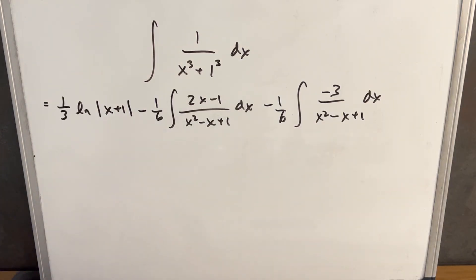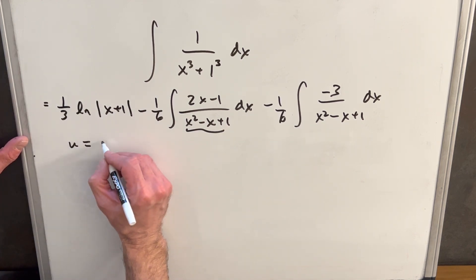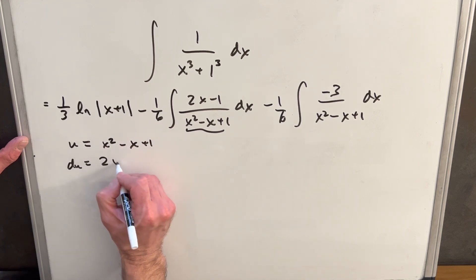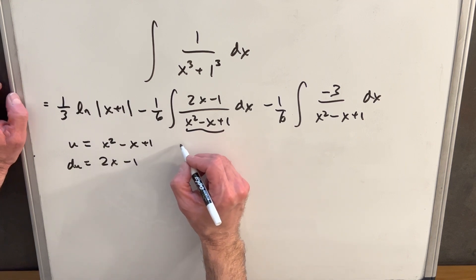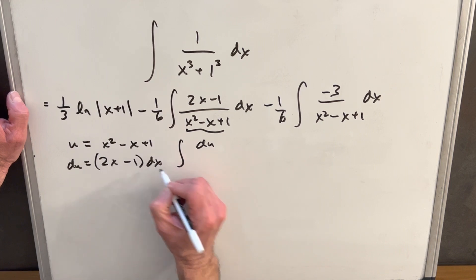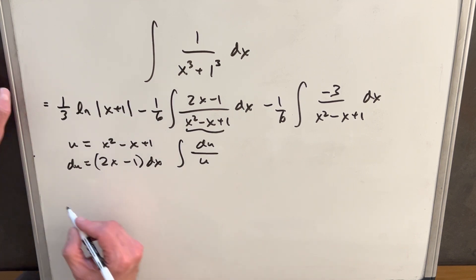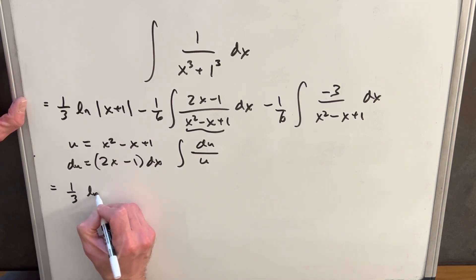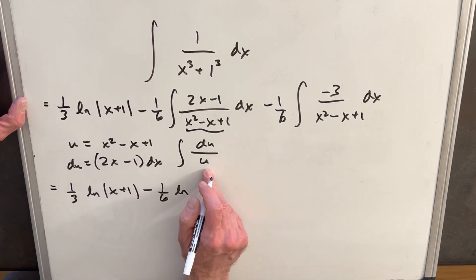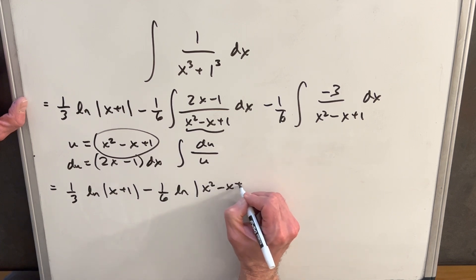Now with the split, we apply our u-substitution: u equals x squared minus x plus 1, so du equals 2x minus 1 dx. Focusing on the first part, the integral of du over u is just ln of u. Bringing everything together, we have 1 third natural log of x plus 1 minus 1 sixth natural log of x squared minus x plus 1. Then we bring out the minus 3, multiplying by minus 1 sixth to get plus 1 half out front of the remaining integral.